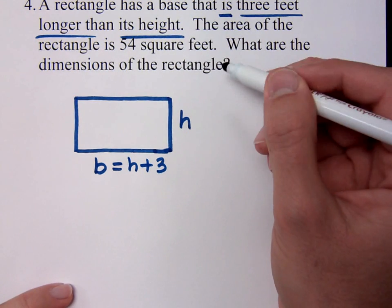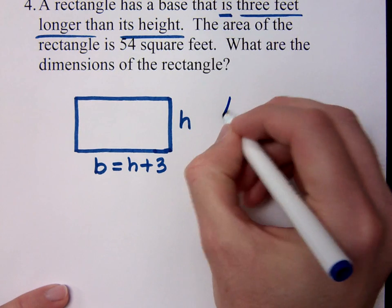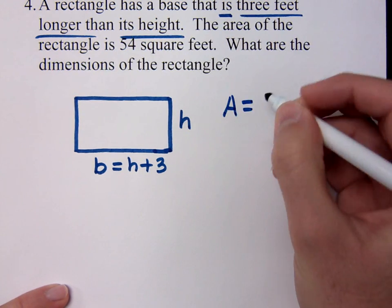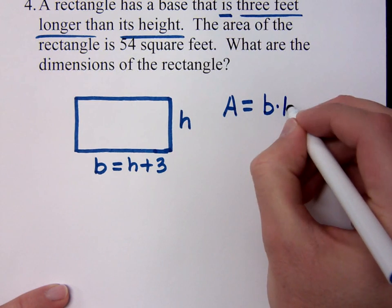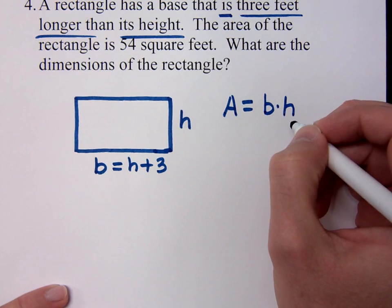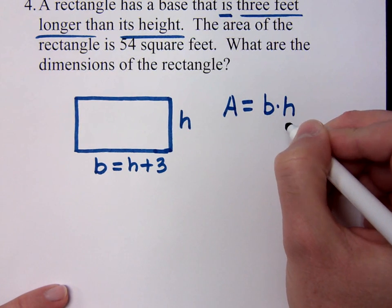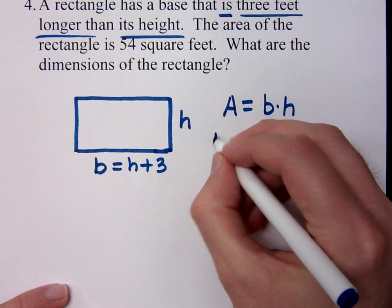Now it says the area is 54 square feet. What is the area for a rectangle? What's the formula? Base times height. It's the base times the height, right? I've got three unknowns. I've got the area, the base, and the height. But I think I know something about these guys, right? What's my area? My area is given to me as 54.